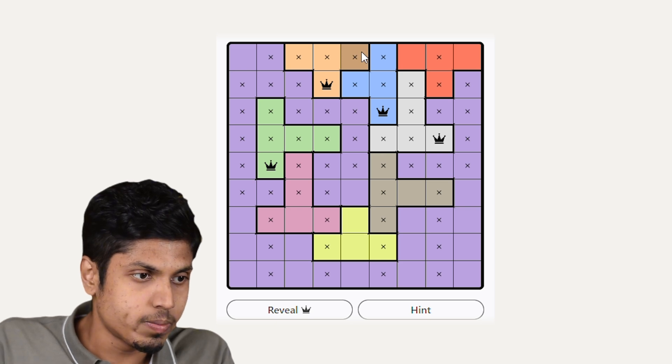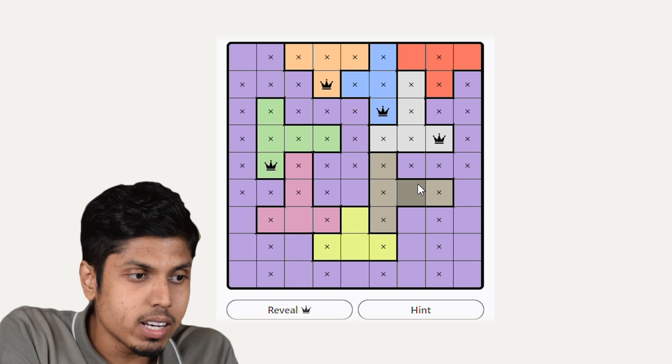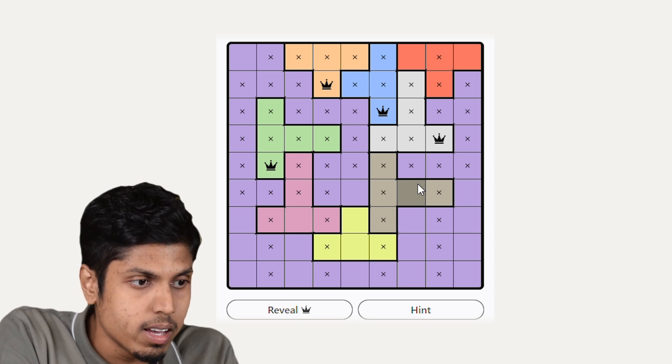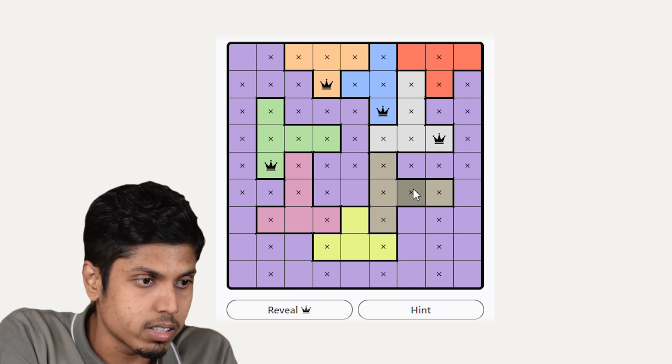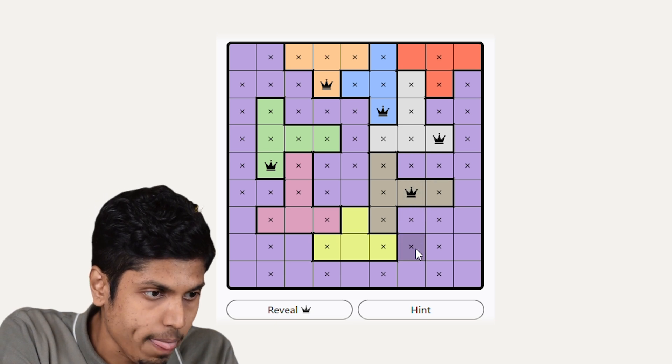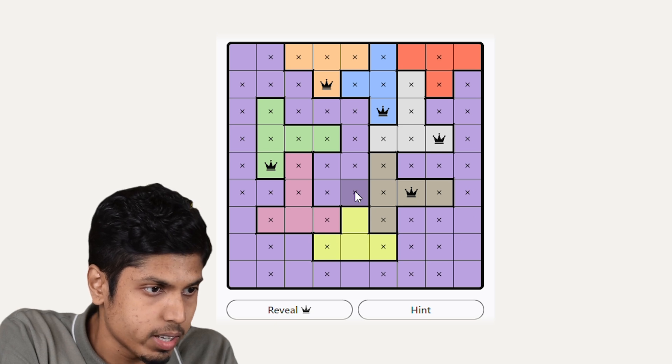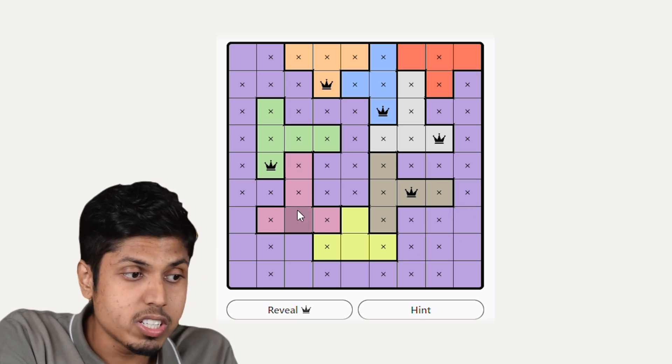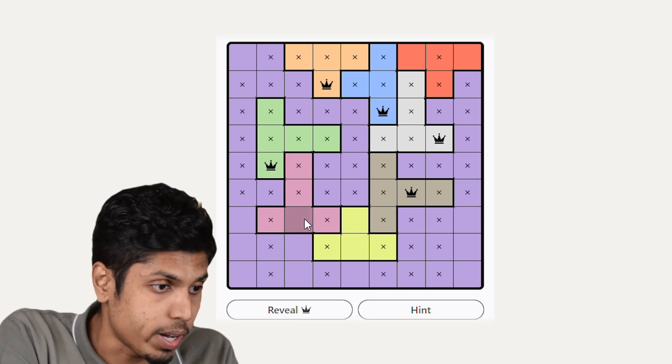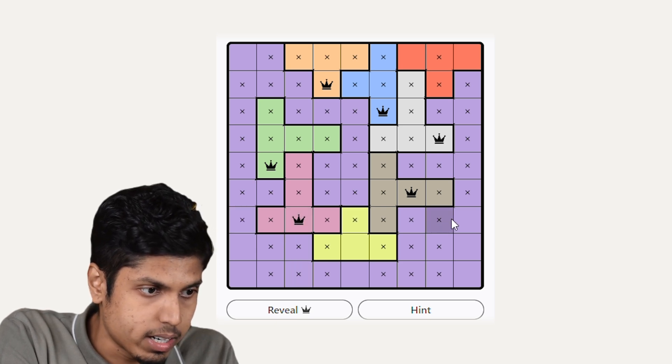Moving on to the gray region, you can clearly see that there is only one cell remaining. So let's fill it up with the crown, so that will make the corresponding row and column to be abandoned. And even in the purple region, there is only one cell remaining. Filling it up, you will get the abandoned squares.